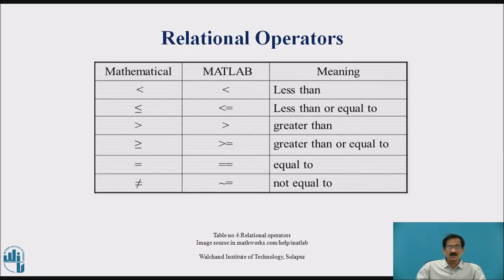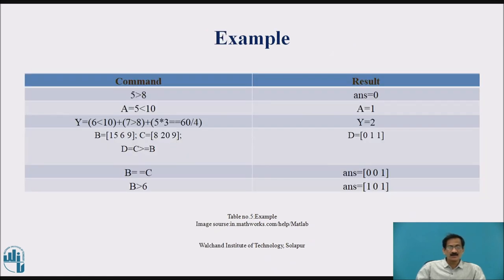These are relational operators: less than, less than or equal, greater than, greater than or equal, equal to, not equal to. The symbols are similar to regular mathematics. Example: 5 greater than 8 — is 5 greater than 8? No, the condition is false, so the answer is 0. Similarly, a equals 5 less than 10 — yes, so the answer a will be 1.